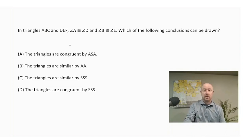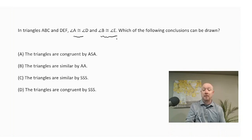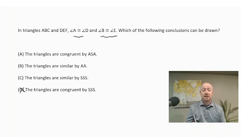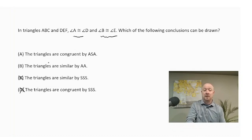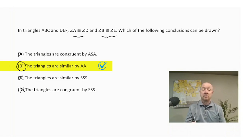The first thing I notice is the only information I have is that two angles are congruent. Any proof of similarity or congruence that talks about sides, we can't use here. That eliminates choice D — congruent by Side-Side-Side — and choice C — similar by Side-Side-Side — since we have no information about the sides. For choice A, congruency by Angle-Side-Angle needs more than just two angles; we also need an included side. So the only answer is choice B: the triangles are similar by Angle-Angle.